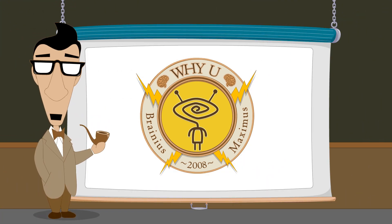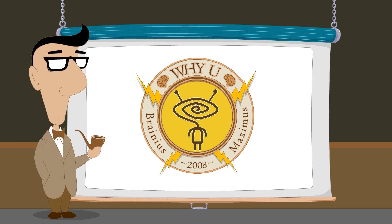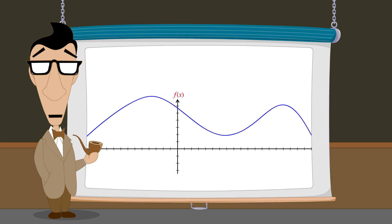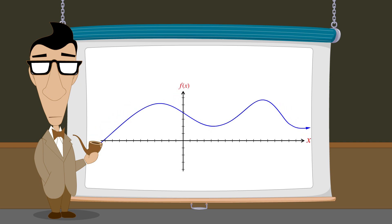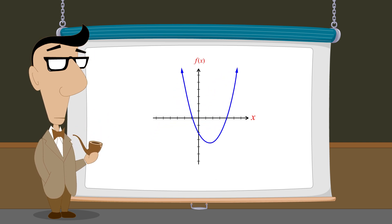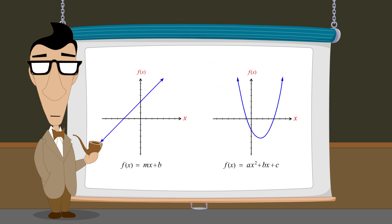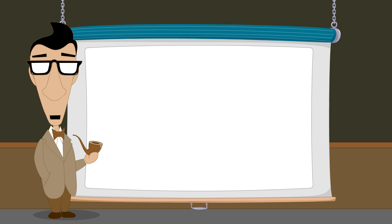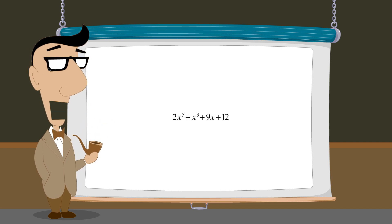Hello, I'm Professor Von Schmohawk, and welcome to Why U. So far in our lectures, we have studied several types of functions of a real variable. In particular, we saw that linear functions have graphs that are lines and that quadratic functions have graphs that are parabolas. Both of these functions are examples of a broader class of functions called polynomial functions. Polynomial functions are powerful tools that allow us to mathematically model many types of real-world problems in areas such as physics, economics, and social science. In the next several lectures, we will explore these functions, so let's start by examining a typical example of a polynomial.